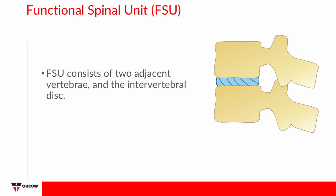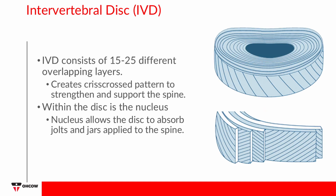A segment of the vertebral column is referred to as a functional spinal unit, or FSU. The FSU consists of two adjacent vertebrae and the intervertebral disc. Discs are like shock absorbers that also help permit movement to occur, allowing for small rocking movements between each vertebra.